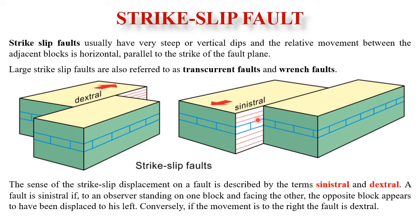The sense of strike-slip displacement is described using the terms sinistral and dextral. A fault is sinistral if, to an observer standing on one block and facing the other, the opposite block appears to have moved to the left — this is a left-lateral strike-slip fault. If the opposite block appears to move to the right from either side, that is a dextral or right-lateral strike-slip fault.